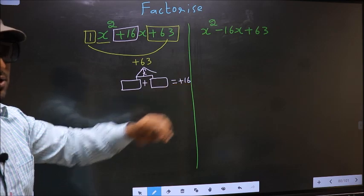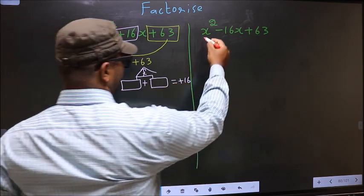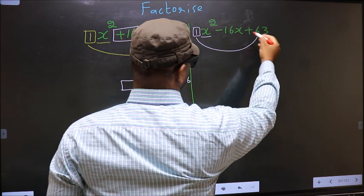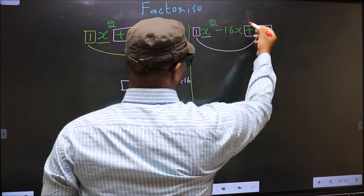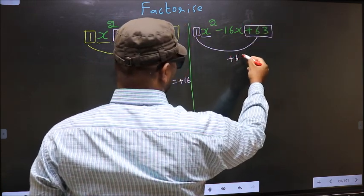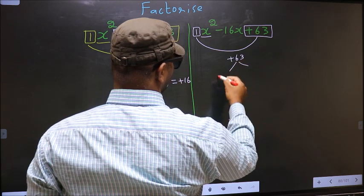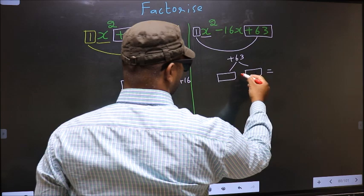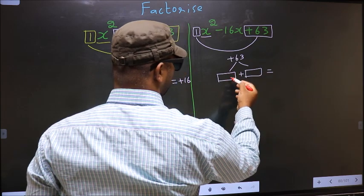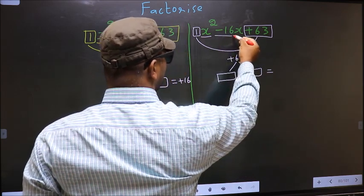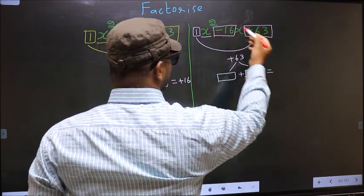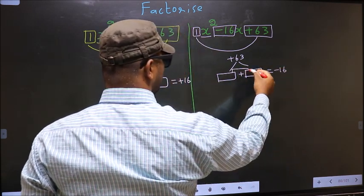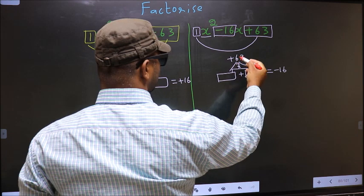Even over here, the same applies. Coefficient of x squared 1 multiplied to the constant plus 63, you get plus 63. Now look out for two numbers such that when you add them you should get middle coefficient minus 16, and also when multiplied you should get plus 63.